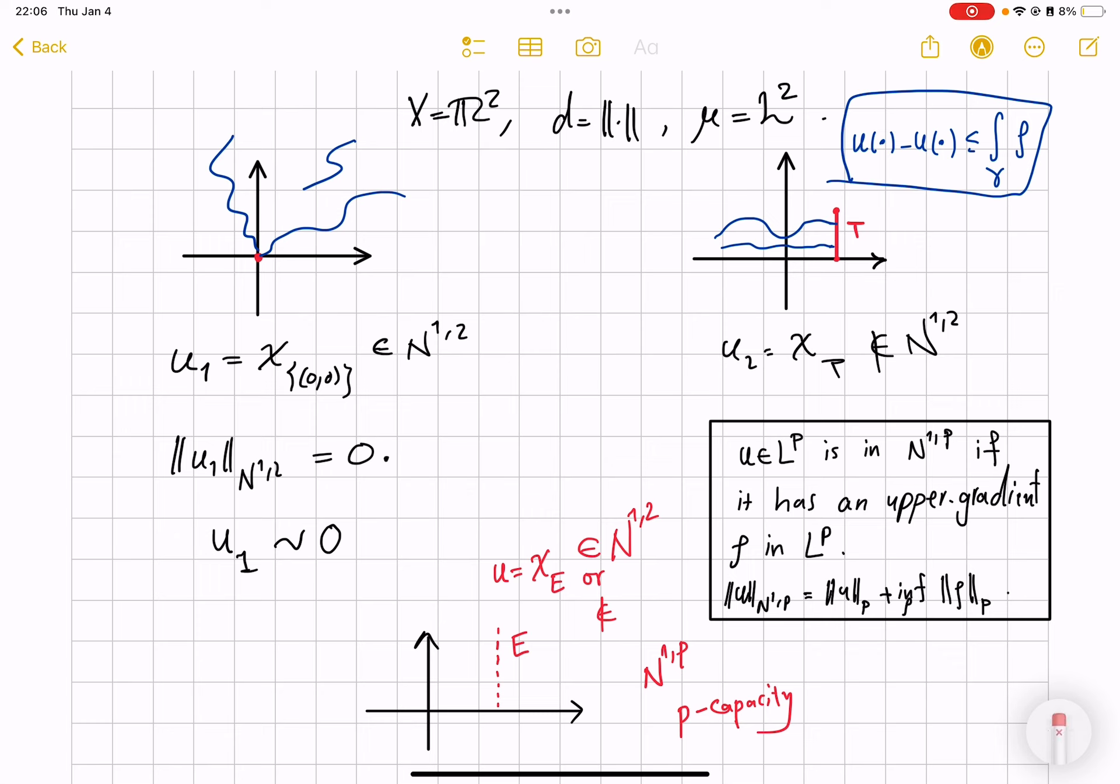However, for those curves that end in the origin, the difference at the end points of u values is one, so we needed to make sure that this upper gradient integral is at least one for every curve, which also forced us to have infinity near zero so that we captured that inequality even for extremely tiny curves.